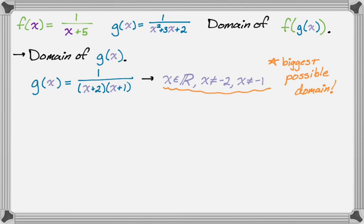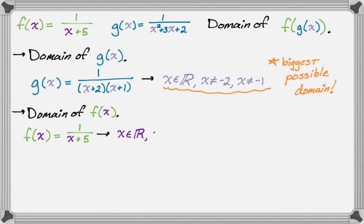So the next step is we've got to look at f(x). So we're going to find the domain of f(x). So to do that, again it's a rational function, so f(x) is just 1 over x plus 5, and that means the domain of f(x) is going to be x is an element of the reals, but it's a different x, that's why I'm using a different color, so x can't be negative 5.